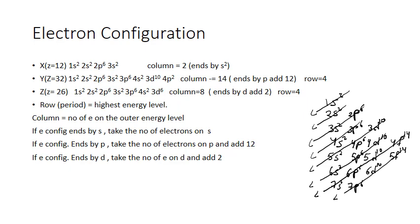For example, atom X with atomic number 12 has 12 electrons to distribute. We write: 1s2, 2s2, 2p6, 3s2. Adding the electrons: 2 plus 2 plus 6 plus 2 equals 12. So the number of electrons equals 12, confirming this is the correct electron configuration.